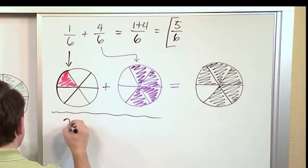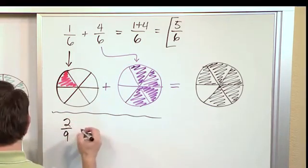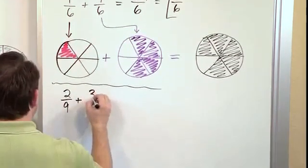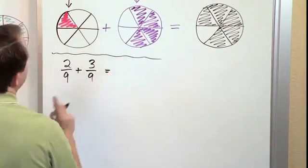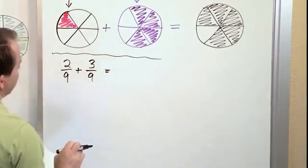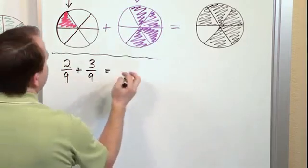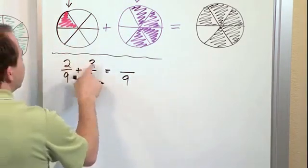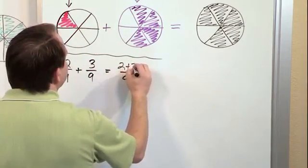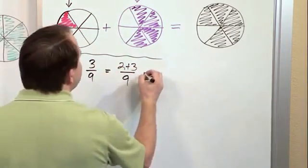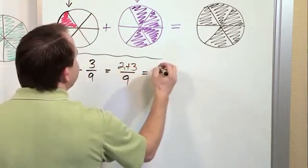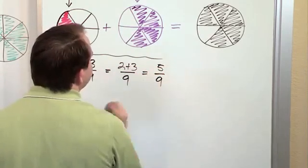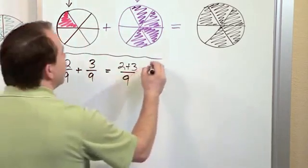So let's say we have 2/9 plus 3/9. The first thing we check is we say, are the denominators equal? And they already are equal. So in our answer, we just keep a 9. Then we take the numerators and we add them together, 2 plus 3. And then we say 2 plus 3 is 5/9, 5/9. And this is the final answer.